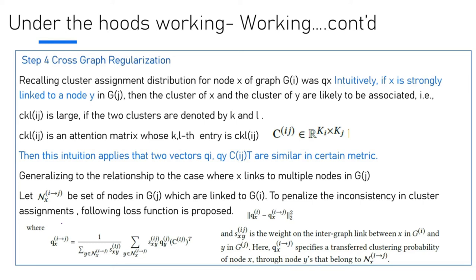Generalizing to the relationship in the case where X is linked to multiple nodes, let N_X_I-to-J be the set of nodes in G_J which are linked to X in G_I. To penalize this inconsistency in the assignments, the following loss function is proposed: Q_X(I) minus Q_X where I tends to J, squared. Q_X(I-to-J) is given by this equation, and SF(X) is a weight pointing to graph link dependencies between X of G_I and Y of G_J. Q_X is the specified transfer cluster probability of node X through node Y that belongs to N_X_I-to-J.